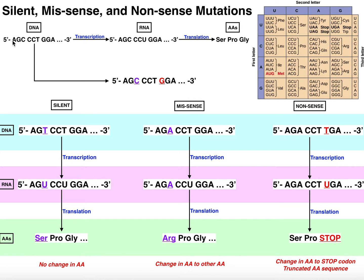If I take this sequence of DNA and convert it into its mRNA, it's not going to change much — I'm going to have AGC, CCU, and GGA. The only difference is that all the T's are replaced with U's. To figure out what amino acids these code for, I can use a genetic code table — just go into Google and type in 'genetic code' and search images to find one.